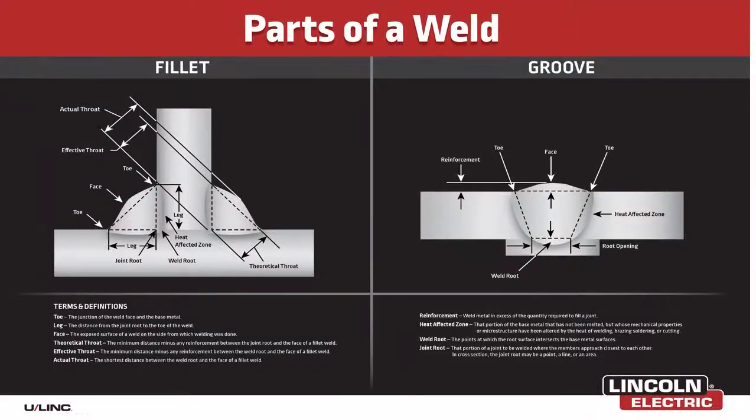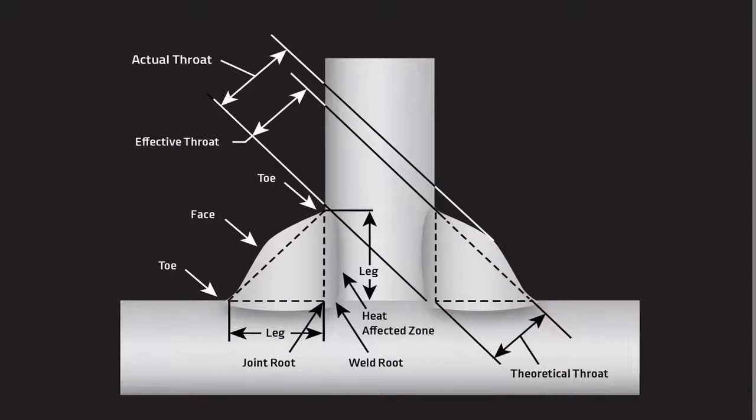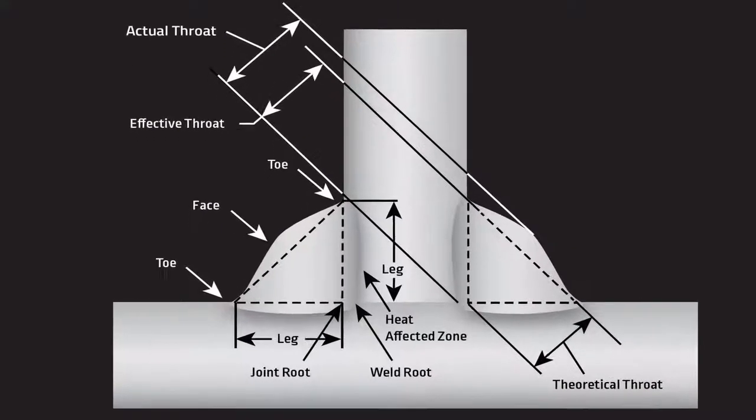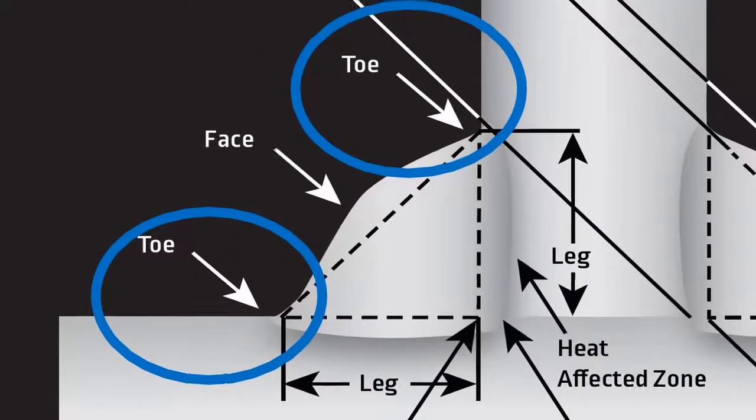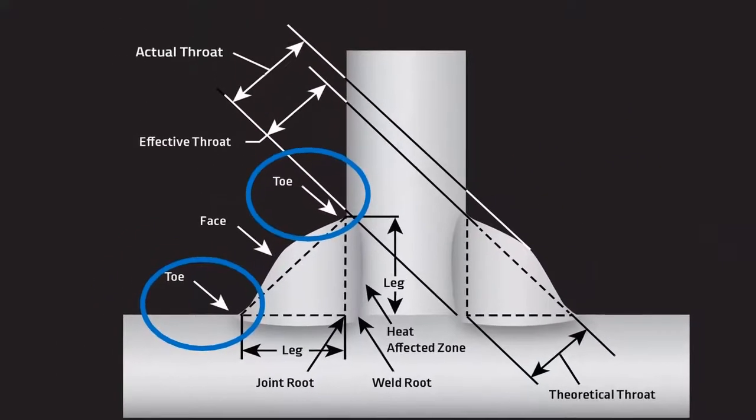On a fillet weld, one of the parts that's also common to a groove weld is called the toe of the weld. That's the part of the weld where the weld metal actually blends in to the base metal.